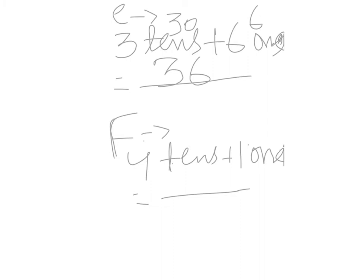Part f is four tens plus one one. Four tens equal forty and one one equals one, so forty plus one equals forty-one. Four tens plus one one makes forty-one.